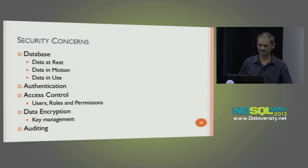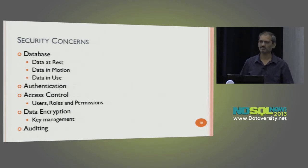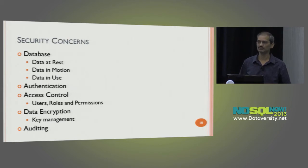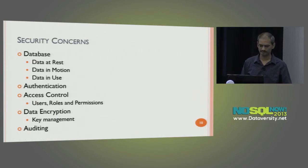Data in use is when you are using the data in the application — going to the database, retrieving data, and displaying it on screen. This is where you decrypt data so the authorized user can view real data, and when they make changes and store it again, you re-encrypt it. Authentication is about verifying who you are — when a user logs in, there are multiple levels including username/password or multi-factor authentication. Access control is about whether an authenticated user is allowed to perform a specific operation or view specific data — this is the users, roles, and permissions model.